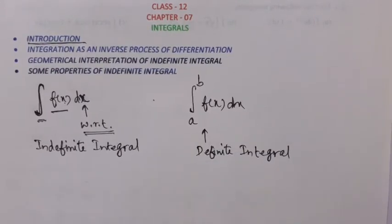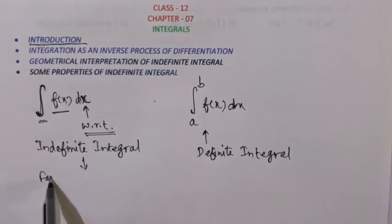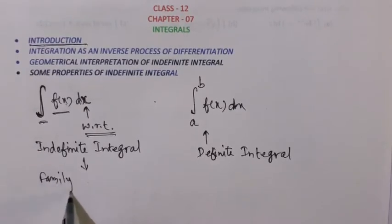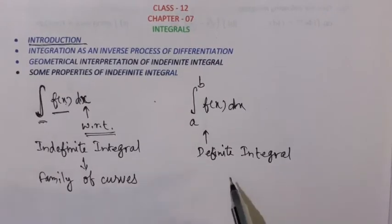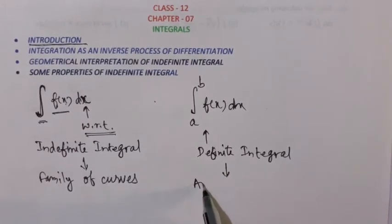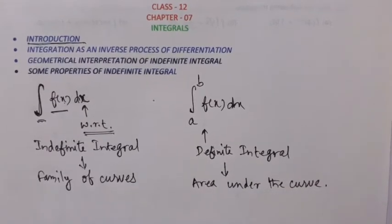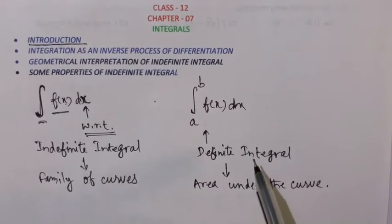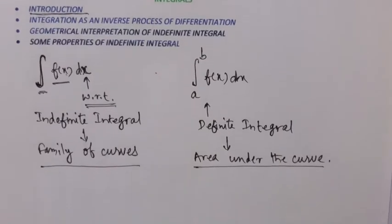The biggest difference between definite and indefinite integral is: from the indefinite integral we get a family of curves, whereas from the definite integral we get the area under the curve. So if you take the definite integral of something you get the area under the curve, and if you take the indefinite integral you get a family of curves.